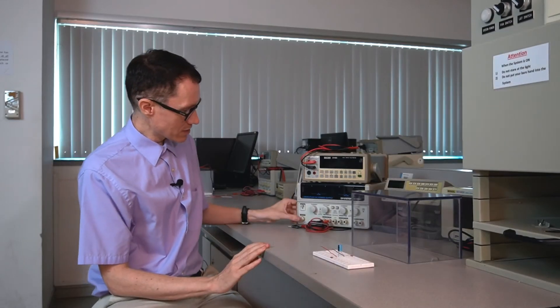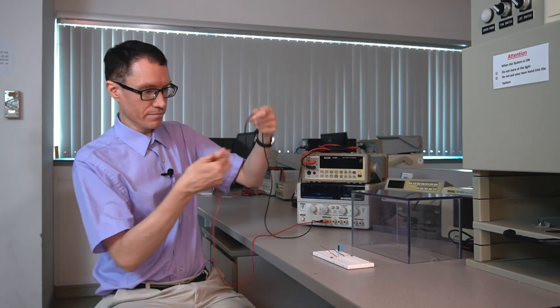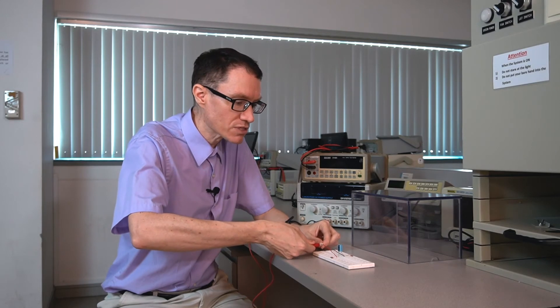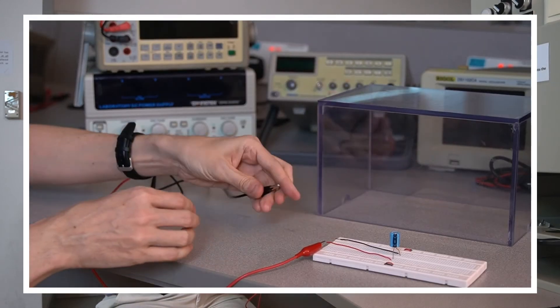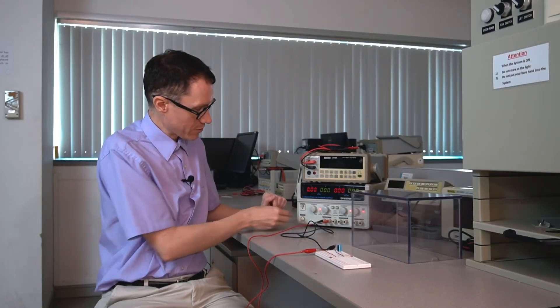I've got a DC power supply over here and we'll use this channel. I'll hook red to red and black to black so that when the DC power supply shows a positive voltage, the capacitor will see the wrong polarity. We'll turn it on, the output is off for the moment.